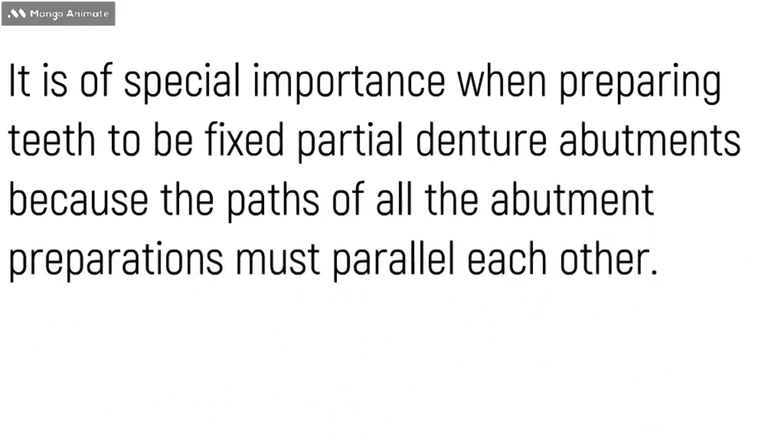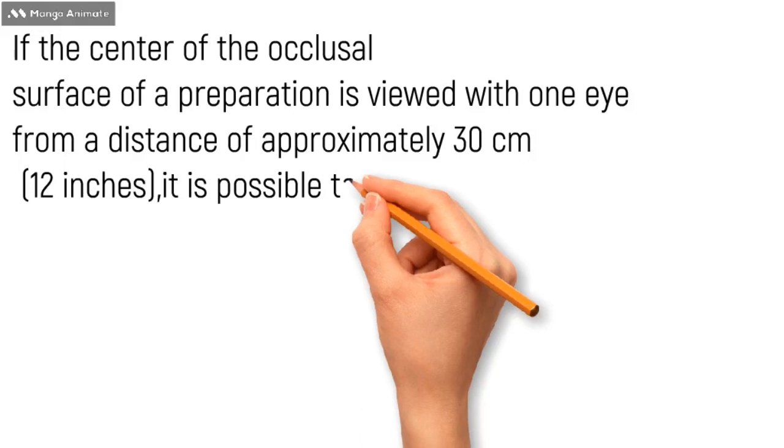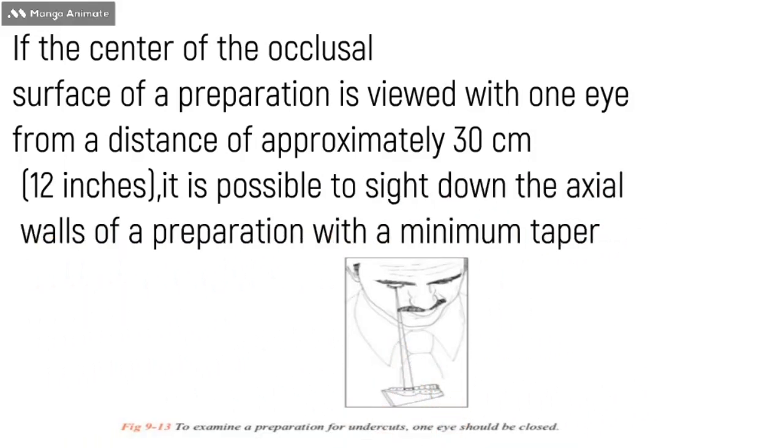How to check the path of insertion? It is viewed with one eye from a distance of about 30 centimeters, and it is possible to sight down the axial wall of a preparation with minimum taper. It can also be viewed from both eyes open, however it will create a binocular vision so it is not suggested.